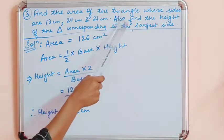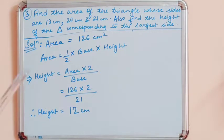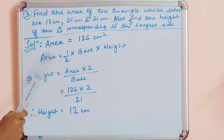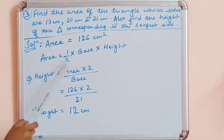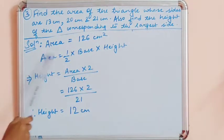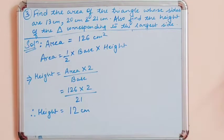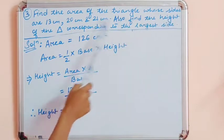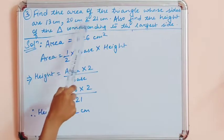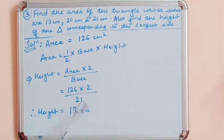Now for the second part: find the height corresponding to the largest side. We have area = 126 cm². Using the formula height = (area × 2) / base, and the largest side among 13, 20, and 21 is 21, so we take base = 21. Height = (126 × 2) / 21 = 12 cm.